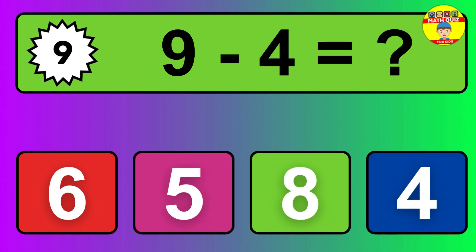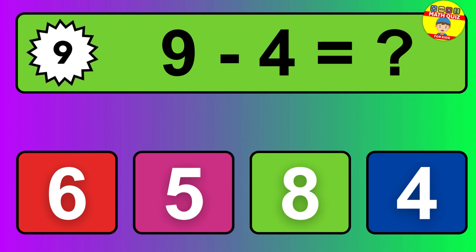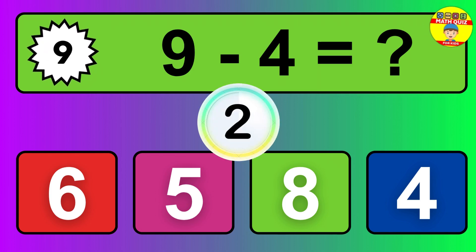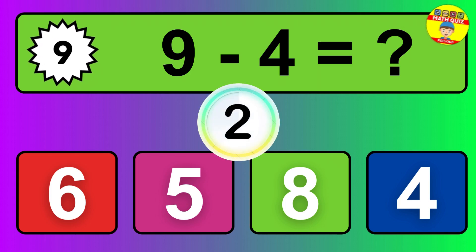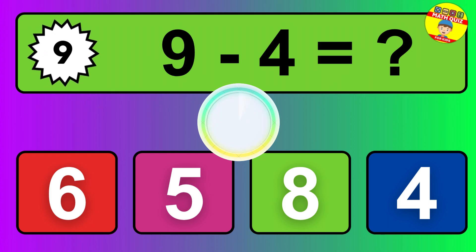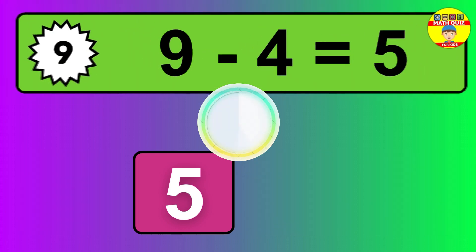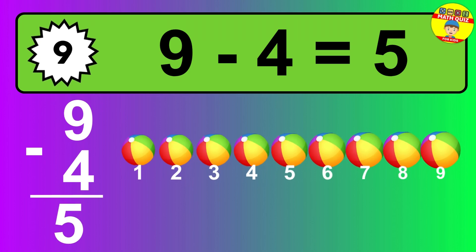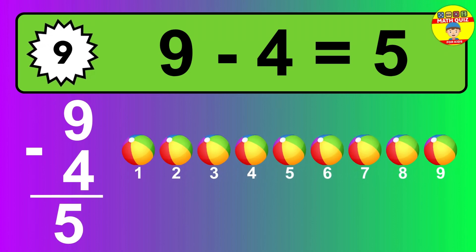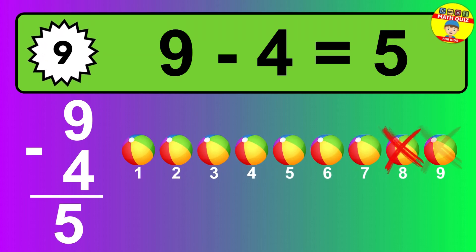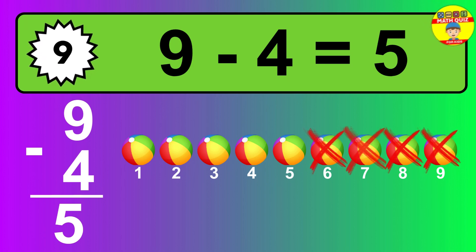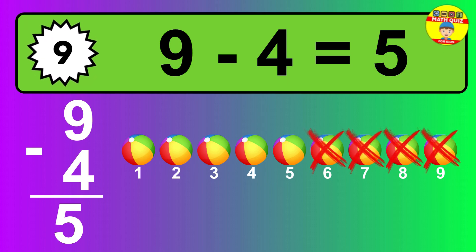Question 9. 9 minus 4 equals what? The answer is 9 minus 4 is 5. Let's count it: 1, 2, 3, 4, 5.